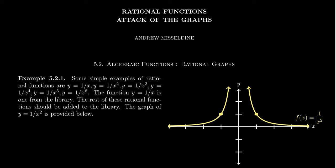It turns out, just like monomials, that there's going to be a parity argument — those with an even power are going to behave very differently than those with an odd power. I want to illustrate this by flipping over to Desmos for a second.